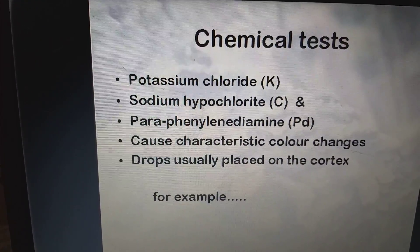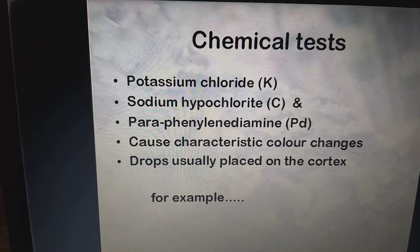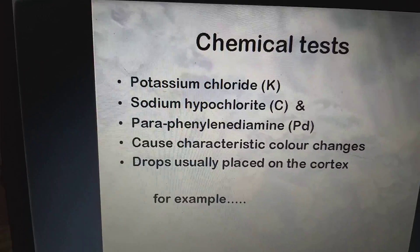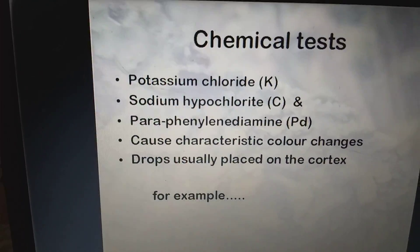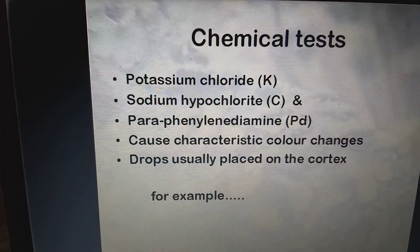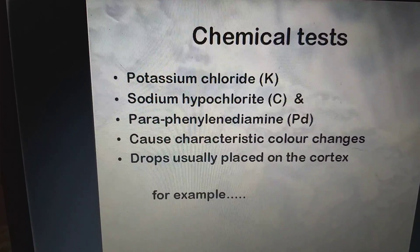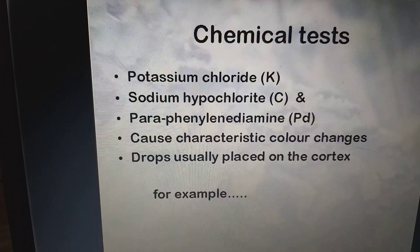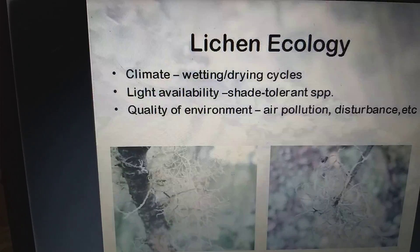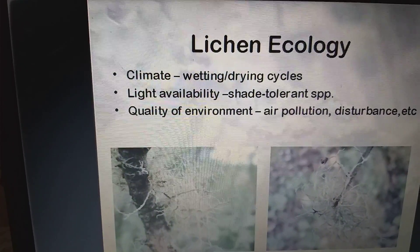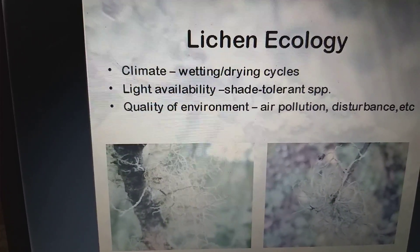For the chemical test, lichens are tested with potassium chloride, sodium hypochlorite, and para-phenylenediamine, which cause characteristic color changes. Drops are usually placed on the cortex.